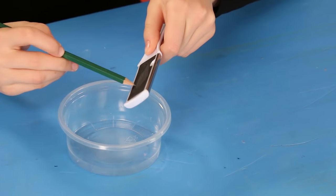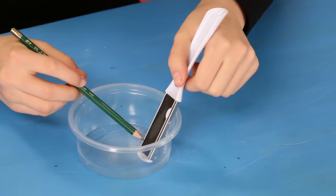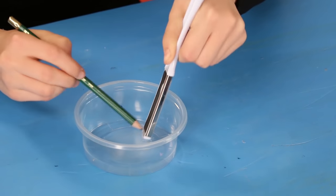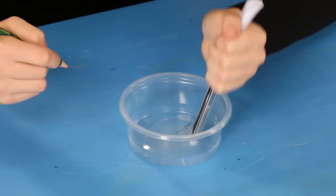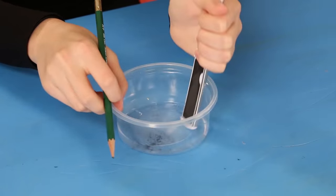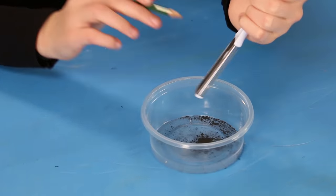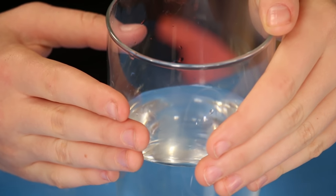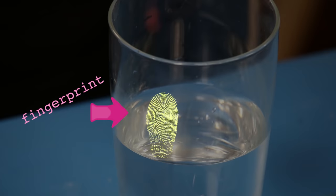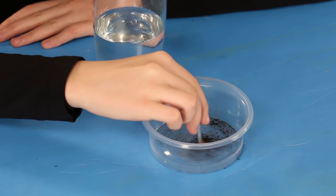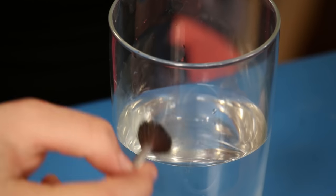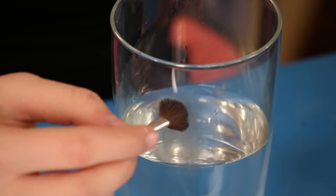Hold the nail file and pencil over the container. Rub the pencil lead onto the nail file to make dust. Find a fingerprint. Dab the makeup brush in the pencil dust and brush it over the print. Blow off the excess dust.